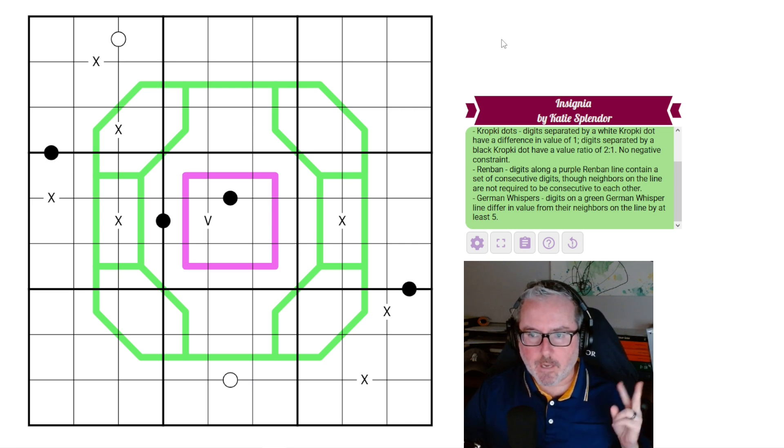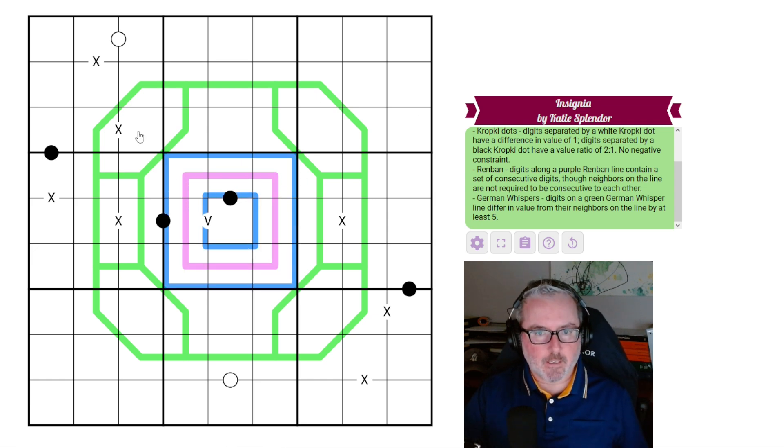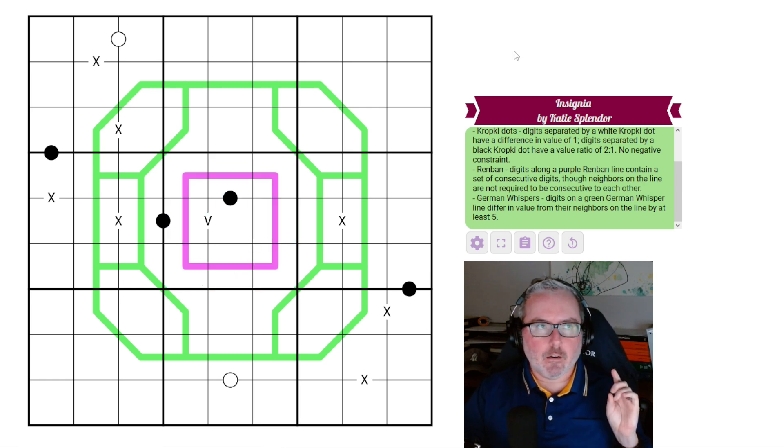And then we have two more things here. We have the renban. So this is the only renban. Everything else is a German whisper color. So digits along a purple renban line contain a set of consecutive digits, though neighbors on the line are not required to be consecutive to each other.